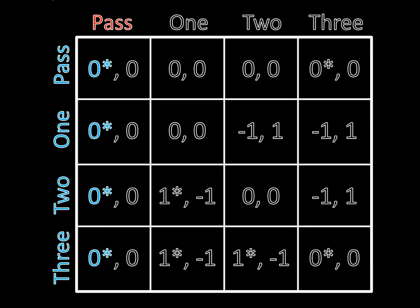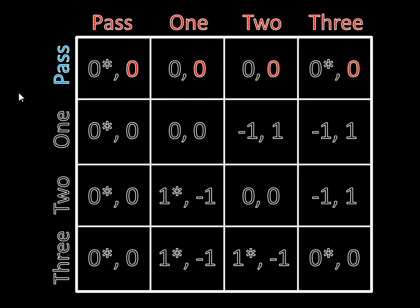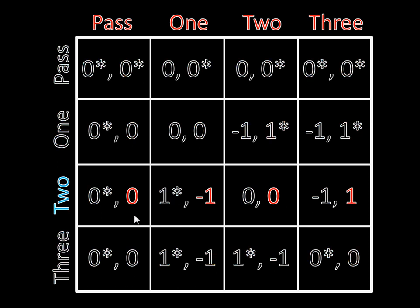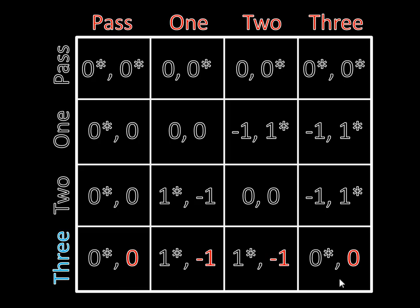We've gone through all of player two's moves and marked all of player one's best responses — we're halfway done. Now we need to consider player two's best responses to player one's actions. If player one passes, player two is indifferent between all four strategies, so all of those get an asterisk. If player one plays one unit, player two can get zero, zero, one, or one — ones are greater than zeros, so both of those are best responses and get asterisks. If player one selects two units, player two can get zero, negative one, zero, or one — one is the largest, so that gets the asterisk. And if player one sends out three units, player two can get zero, negative one, negative one, or zero — the zeros are the greatest, so pass and three are best responses.